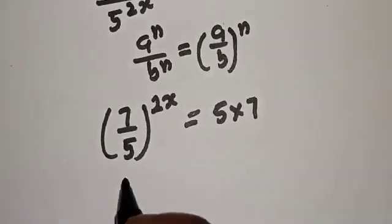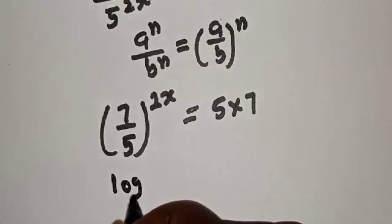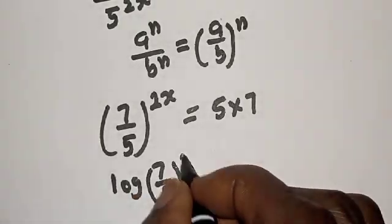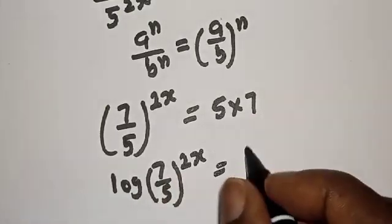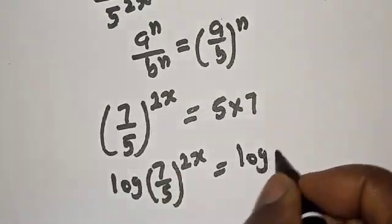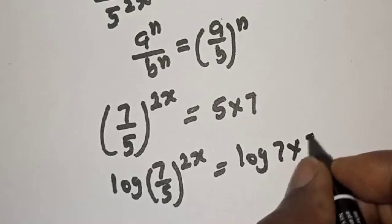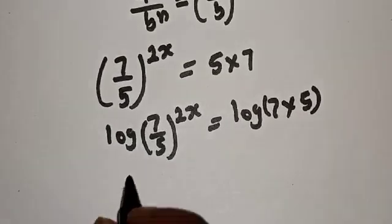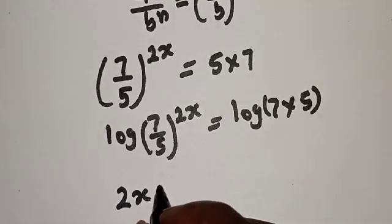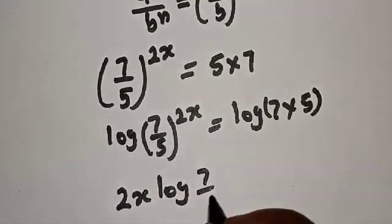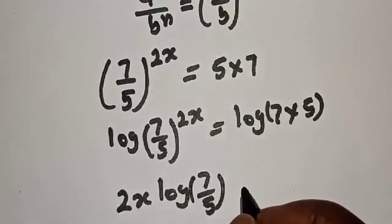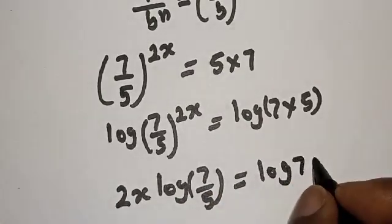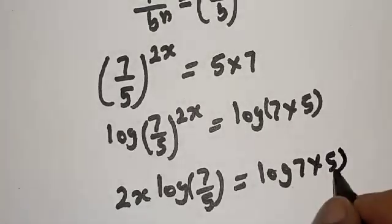Now, let's take the log of both sides. Log of 7 over 5 to the power of 2s is equal to log of 7 times 5. Then, this is 2s times log of 7 over 5 is equal to log of 7 multiplied by 5.